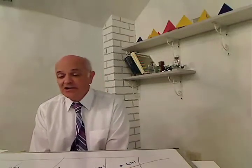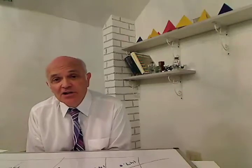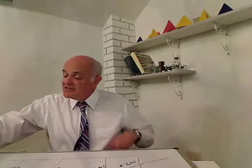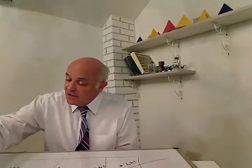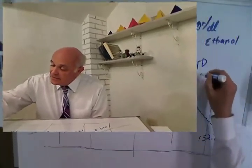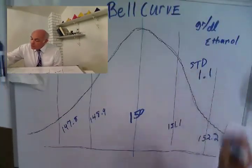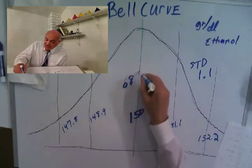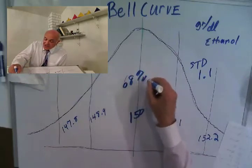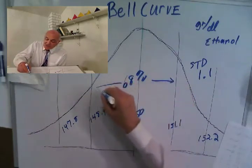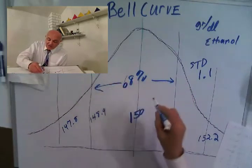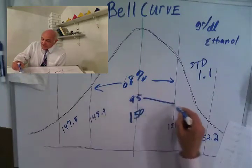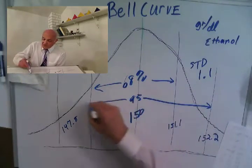It works like this. They run controls at, say, 150 and get a standard deviation of 1.1. That means there is a 68% chance the result falls between two values, and a 95% chance it falls between a wider range of values.